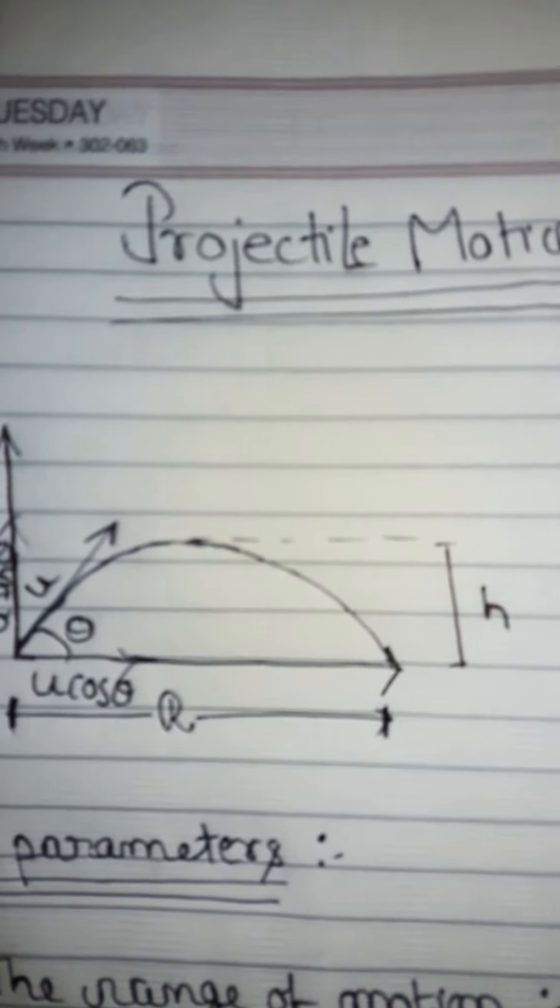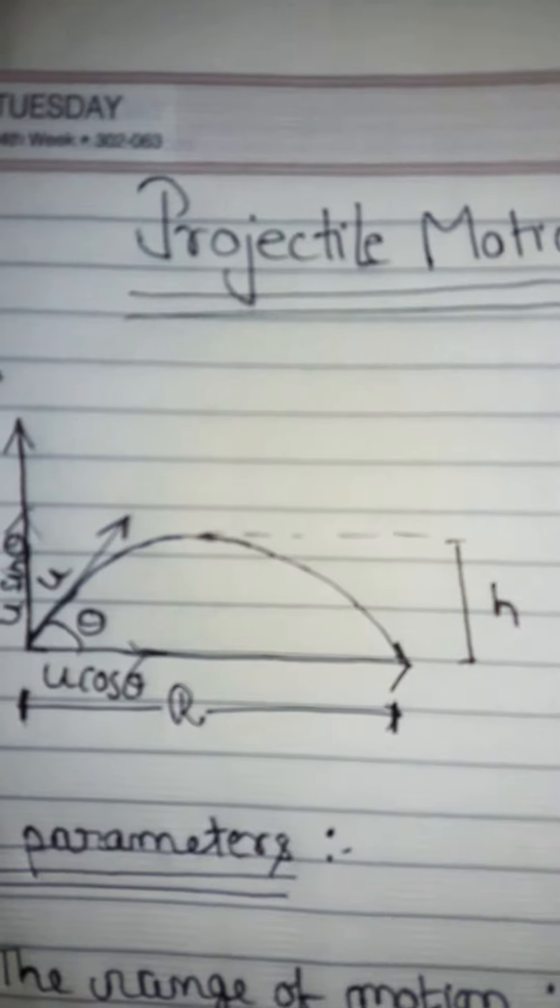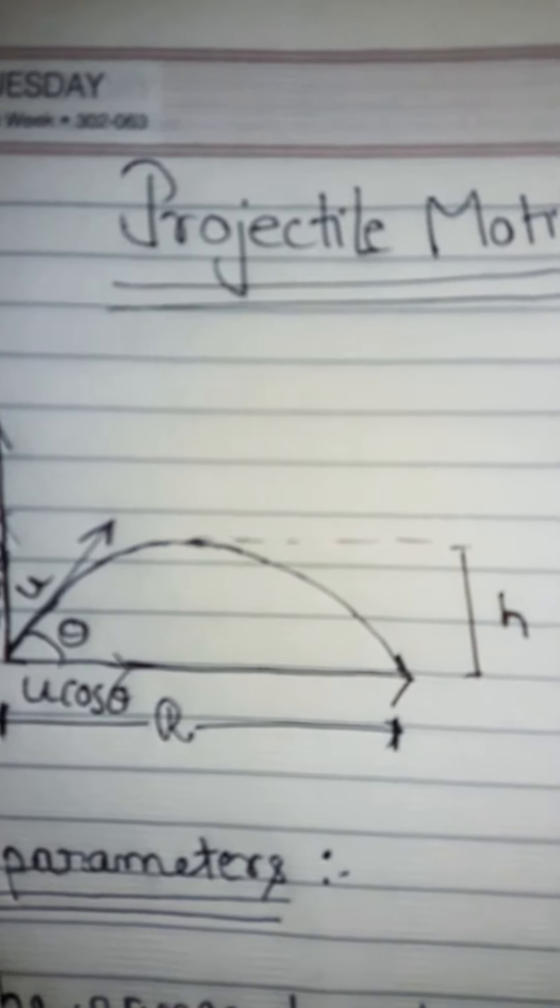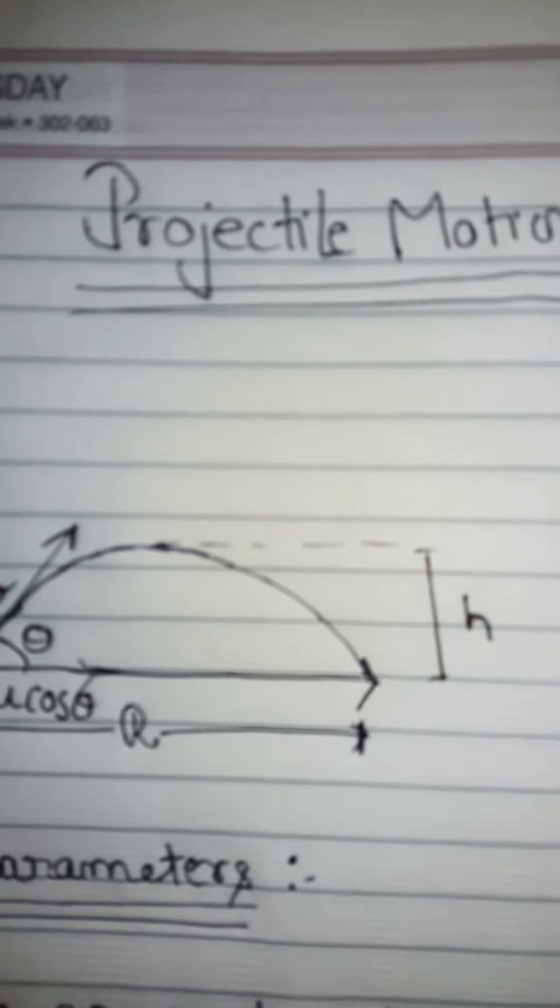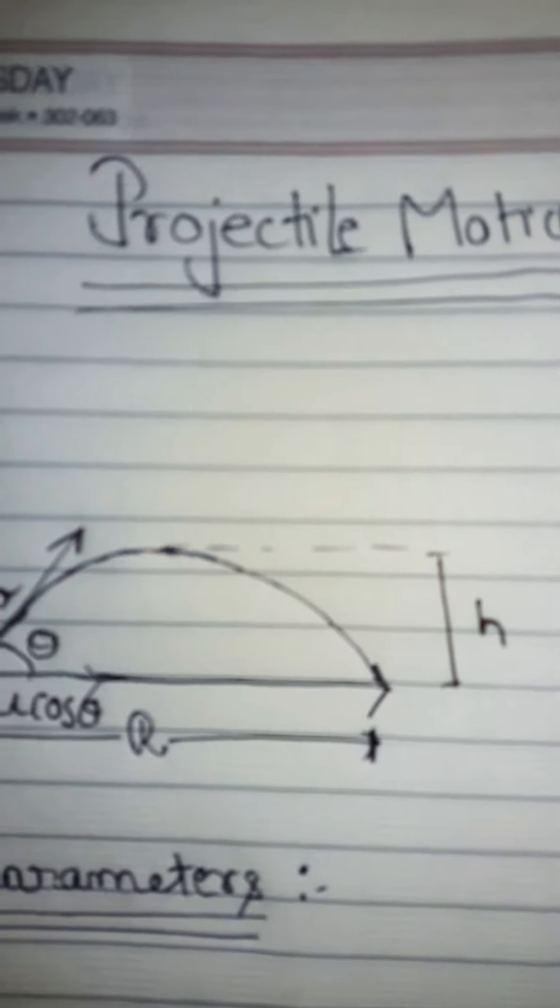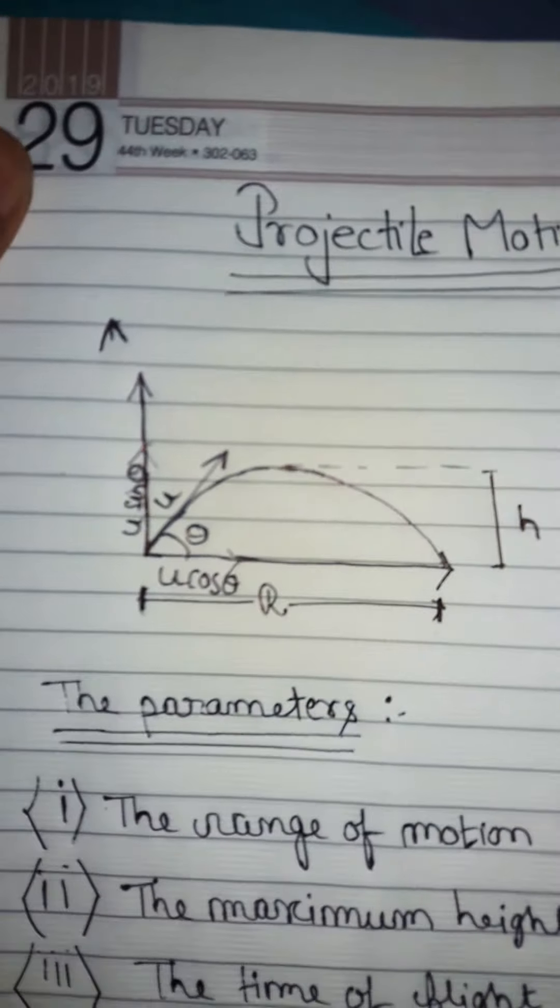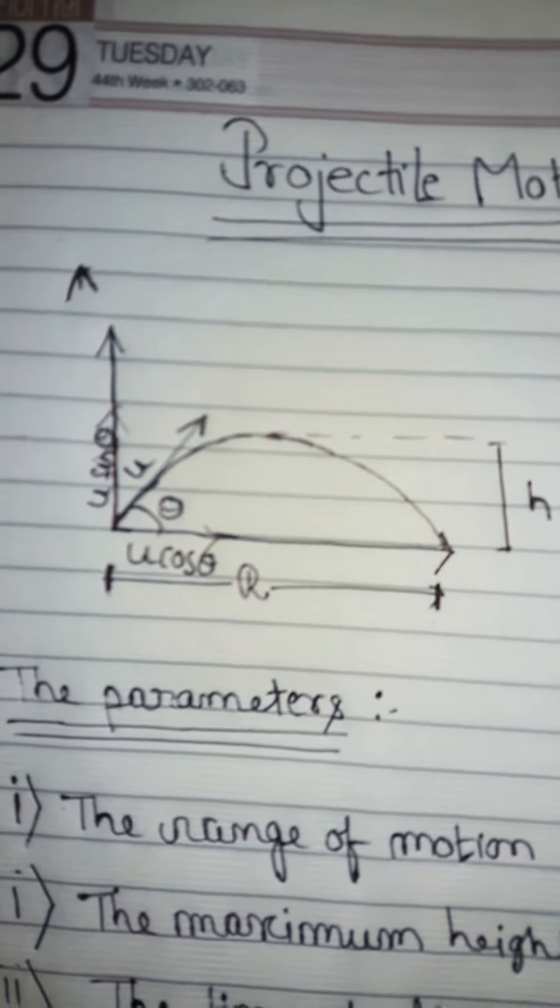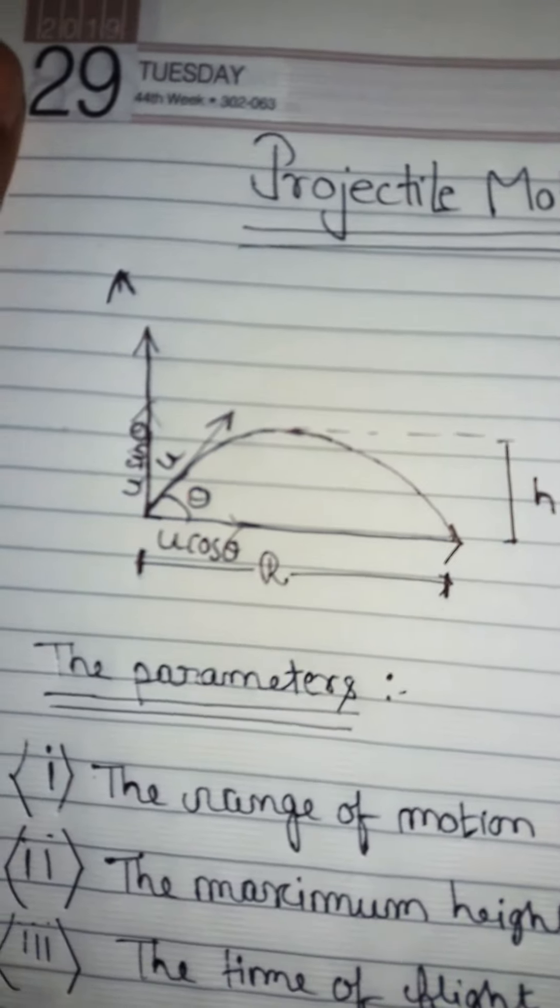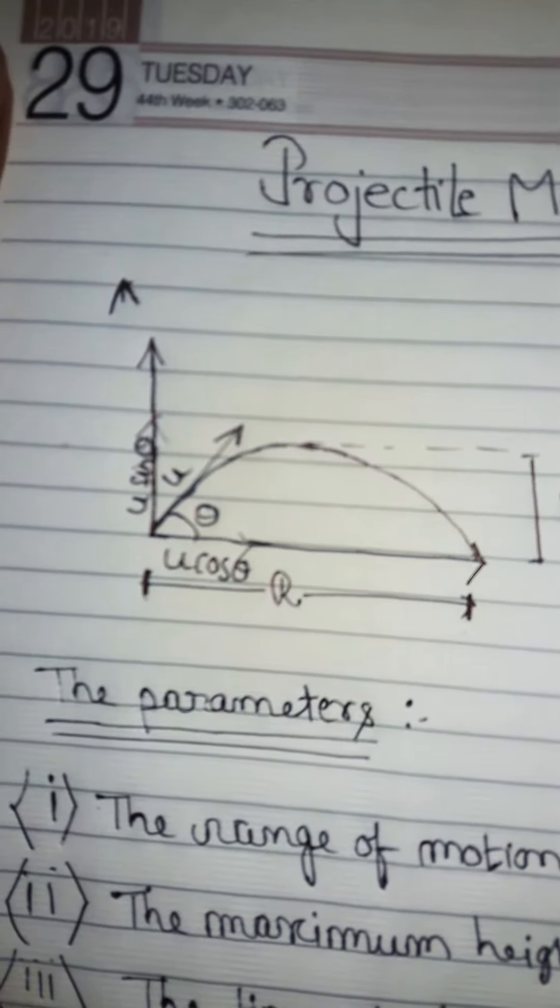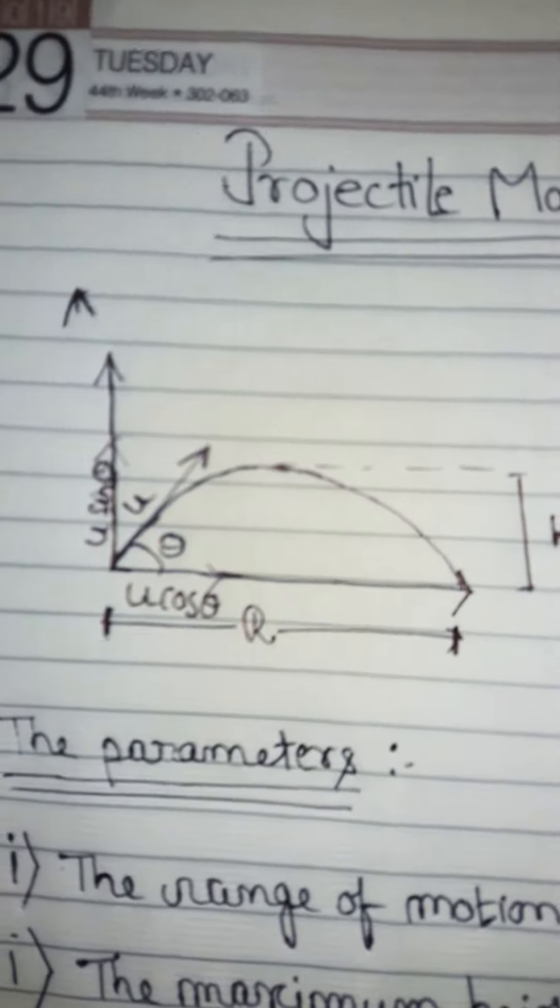...the projectile motion on an inclined plane, or the projectile motion from somewhere high up in the air. Since we are talking about a 2D motion, we'll require two axes: x-axis and y-axis to represent it.